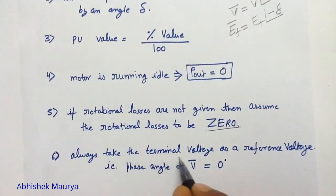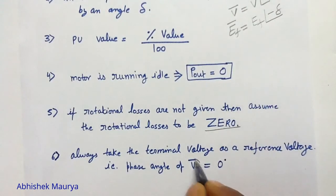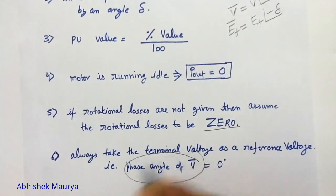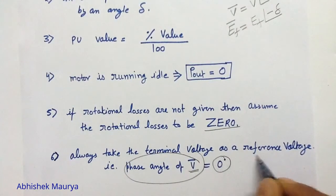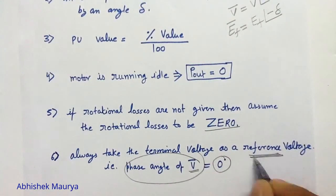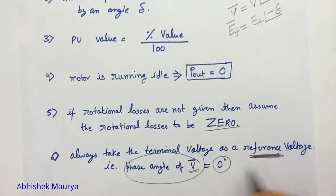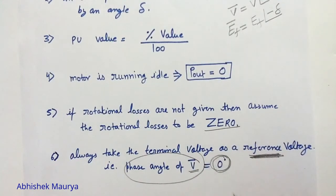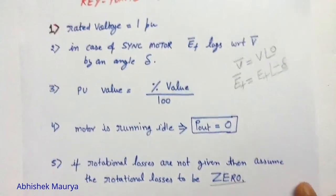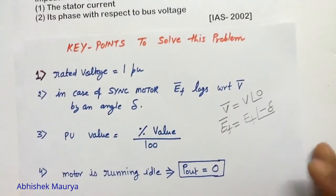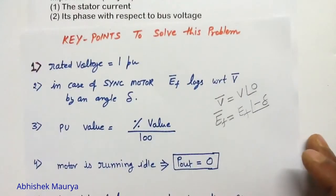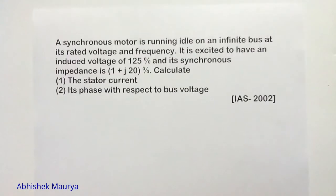Sixth: always take the terminal voltage as the reference voltage — that is, the phase angle of the terminal voltage will be 0. These are the six key points which you should know to solve this problem.